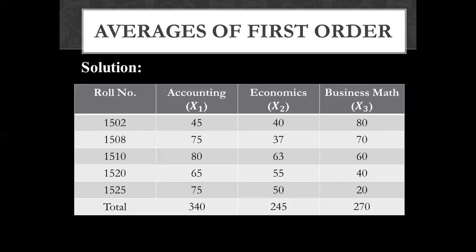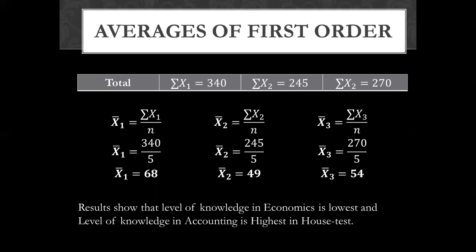We will calculate the mean for these three subjects. x1 bar equals the sum of x1 over n. x2 bar equals the sum of x2 over n, which is 2.45 over n, giving approximately 49. Then x3 bar equals the business math mean, which is approximately 54.